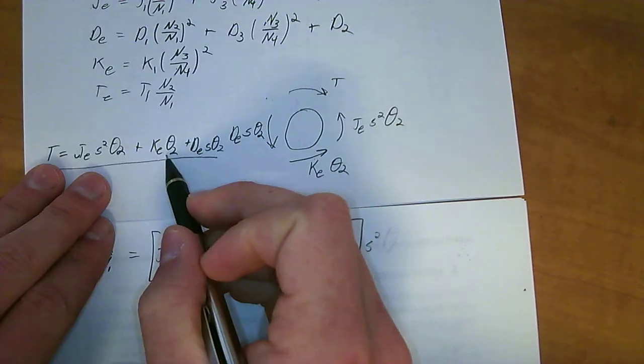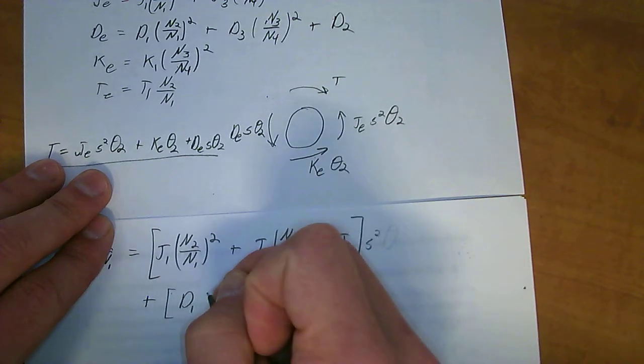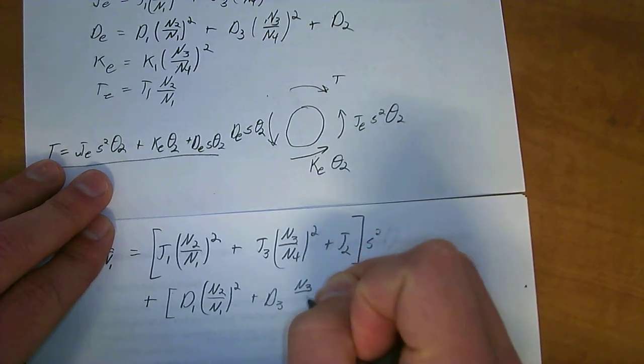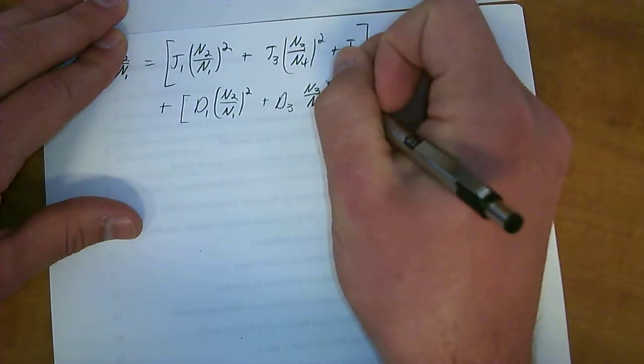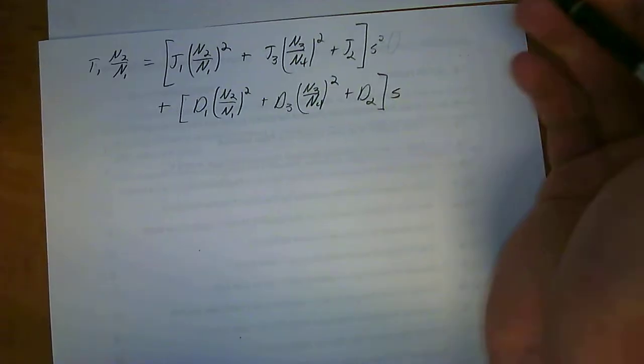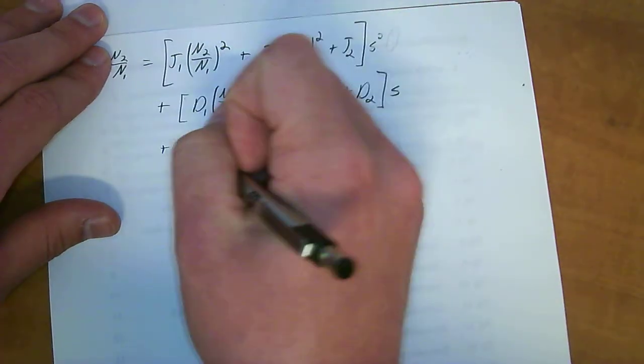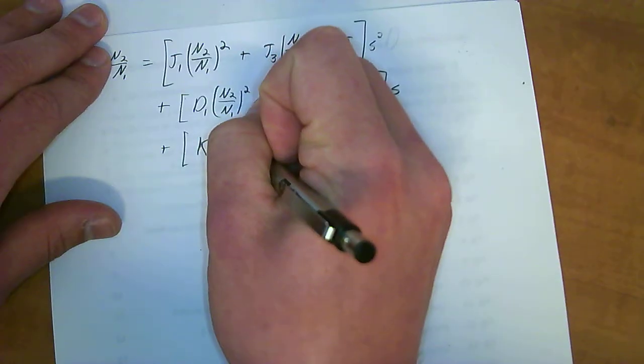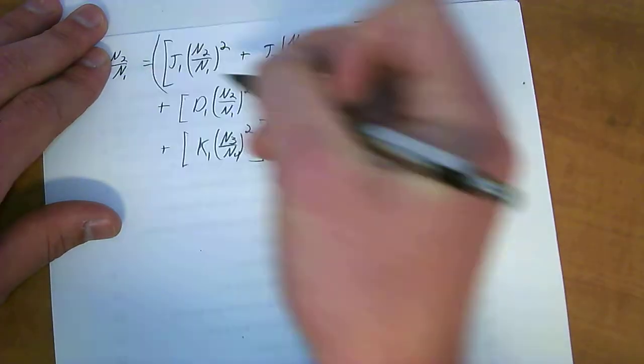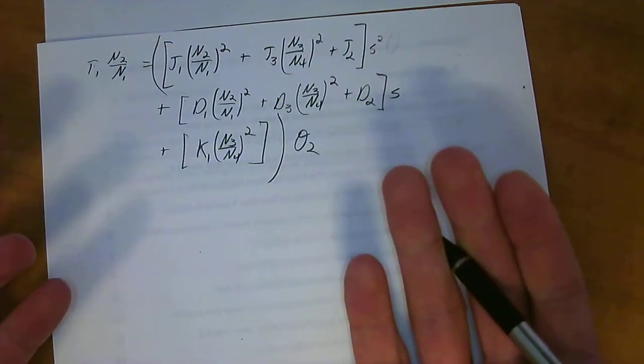I'm going to factor out the thetas right now. Because all of these are multiplied by theta 2, I can just take it to the outside. Plus. I'm going to reverse these right here and do dampening first because it has a longer equation. D1 N2 over N1 squared plus D3 N3 all over N4 squared plus D2 times S. And then plus K1 N3 all over N4 squared. And if you put this all in parentheses, times theta 2. And that's your complete equation. And now that we have that, I'm going to go ahead and sub in values here.